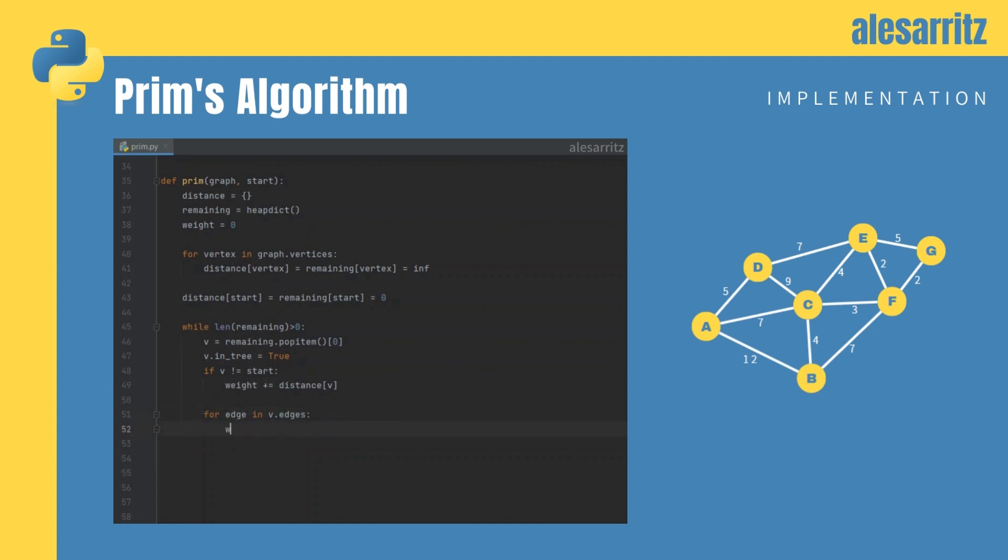Next, let's loop through v's edges, and let's check if passing through v to reach w, a vertex that isn't yet in the tree, weighs less than the value saved inside distance for w. In that case, we update distance, remaining, and w's parent.